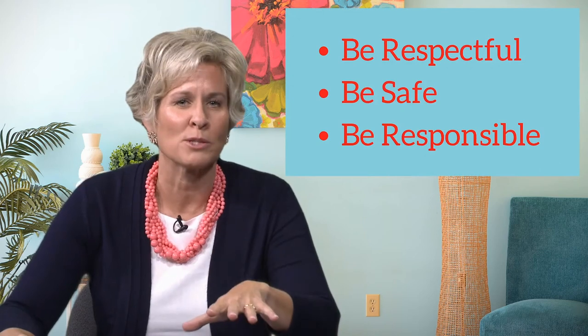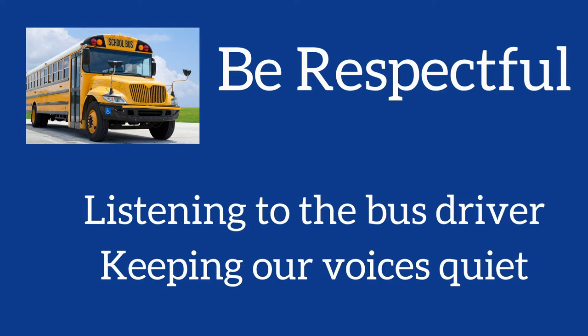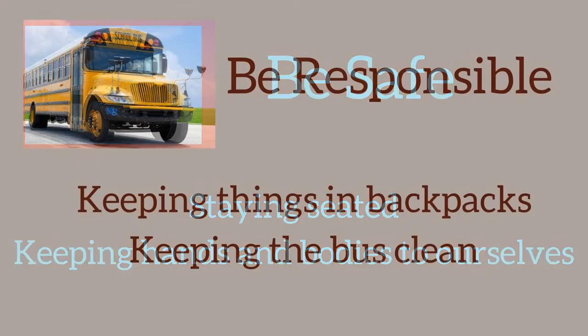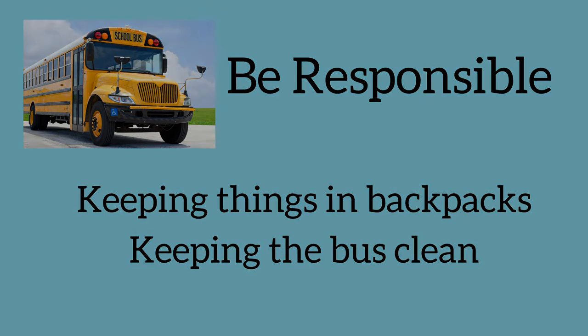Your next task will be to pause and fill in the boxes determining what expected behavior should look like in each of the categories and environments listed. For example, you might have Be Respectful, Be Safe, Be Responsible as your main headings. On the bus, being respectful might mean listening to the bus driver and keeping voices quiet; being safe might mean staying seated and keeping hands and bodies to yourself; being responsible might mean keeping things in your backpack and keeping the bus clean.